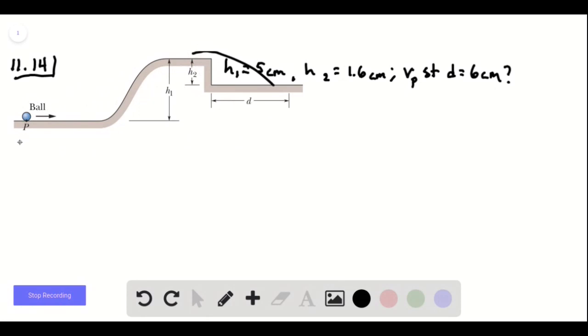So the initial speed falling off of this in the vertical direction is going to be zero. Going back to chapter four for projectile motion and things of that nature, the time of flight is going to be two H2 over G.